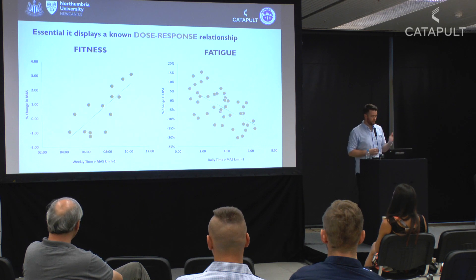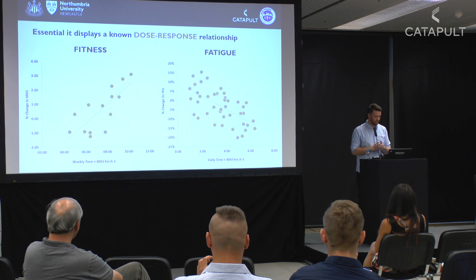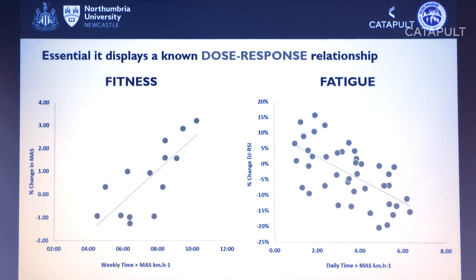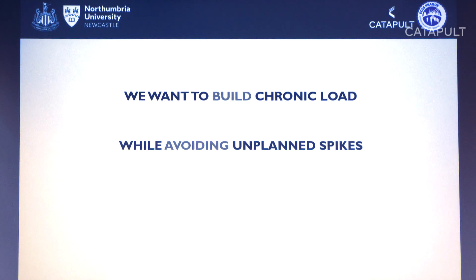The training load measure I'll show you is time above maximal aerobic speed (MAS). We've discussed needing both external and internal measures — this combines the two because it's an internalized measure of external load, individualized based on each player's fitness levels. Our research shows that weekly cumulative time above MAS over a six-week period has a strong relationship with improvements in fitness. However, too much acute load or unplanned spikes will cause undue fatigue, and SPC can help us manage that.